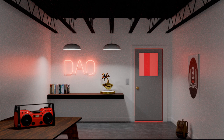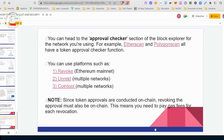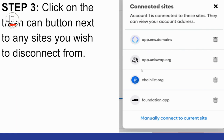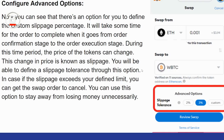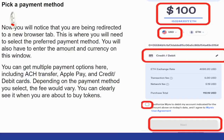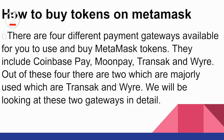We're going straight into how to buy tokens, how to send tokens, and how to swap tokens on MetaMask. To buy tokens, there are four different payment options available: Coinbase Pay, MoonPay, Transact, and Wyre. Out of these four, the two major ones mostly used are Transact and Wyre, and those are the two we'll be looking at in depth.